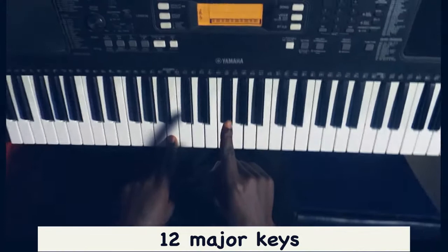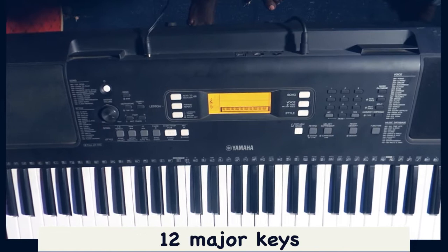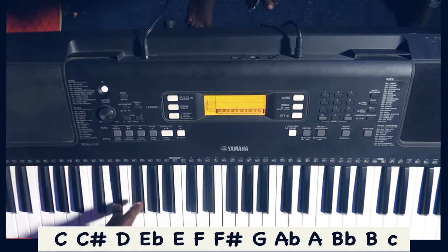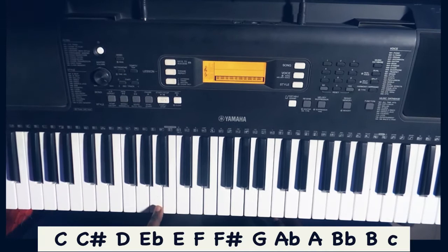When we look at keyboard scales, the keyboard consists of 12 major keys which are counted from C, C sharp, D, E flat, E, F, F sharp, G, A flat, A, B flat, B, then you go back to the C.